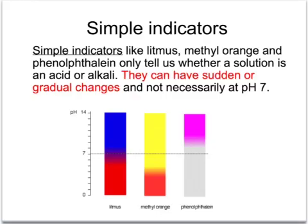So how can we tell that we have an acid or an alkali? We could use a simple indicator such as litmus, methyl orange, or phenolphthalein. Each of these give just two colours, one usually for acid and one for alkali.